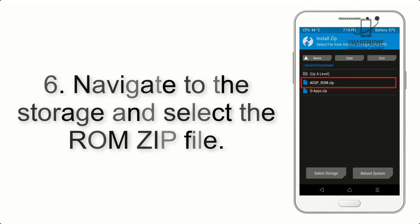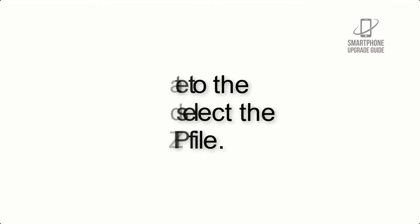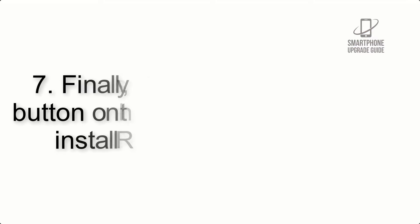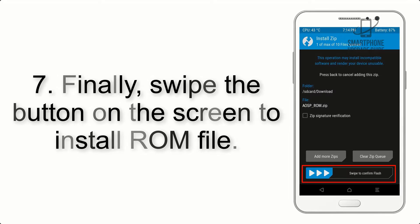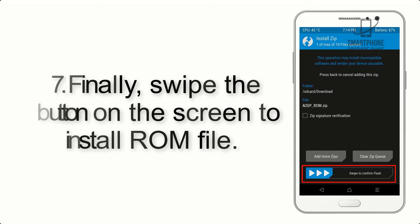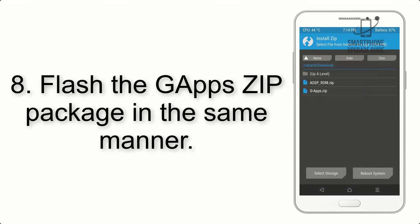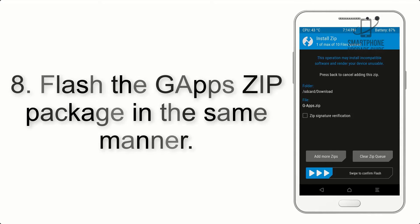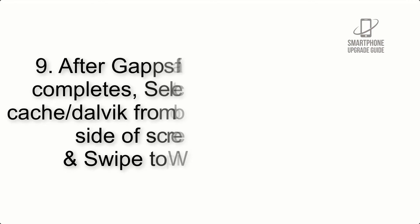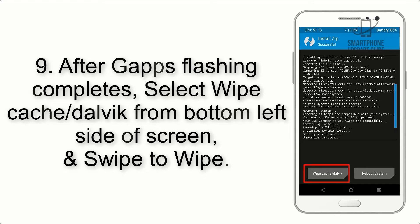Step 5: Go back to the recovery main screen and tap on the Install button. Step 6: Navigate to the storage and select the ROM zip file. Step 7: Finally, swipe the button on the screen to install the ROM file.